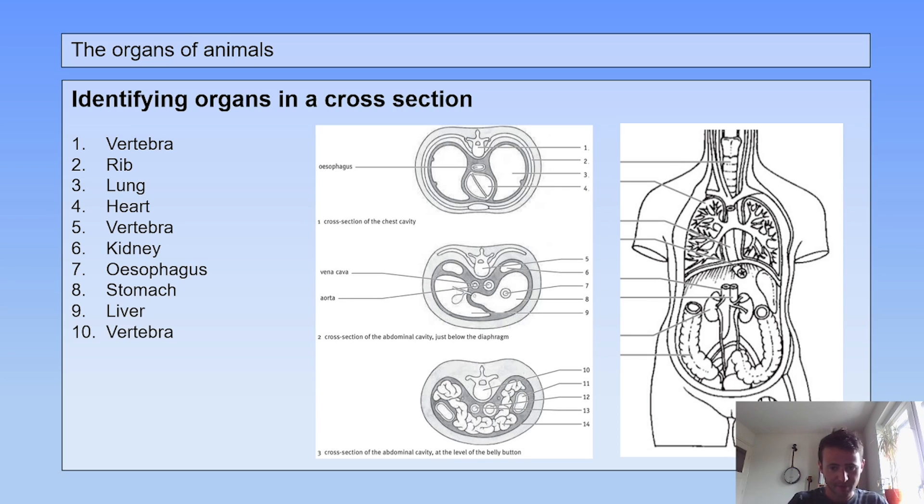Number ten is again a vertebra, and number eleven is the large intestine. If you look at this part, and if you would make a cross section here, you see that the large intestine travels up and normally goes horizontal here and travels down again. So if you make a cross section, you see two big holes here. Number eleven is a part of the large intestine. Number twelve is the aorta. Thirteen is the vena cava, and fourteen is the small intestine.